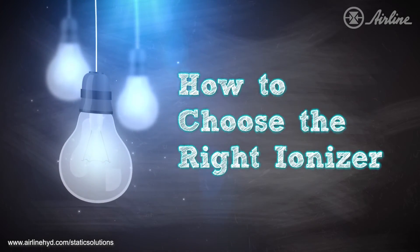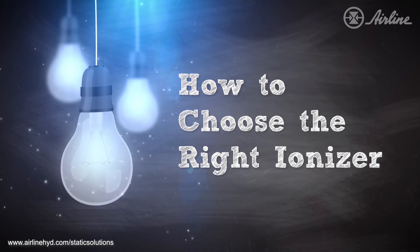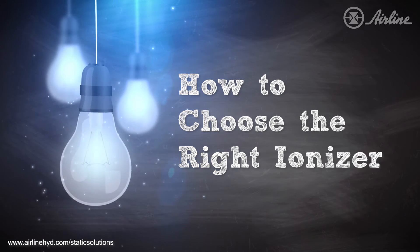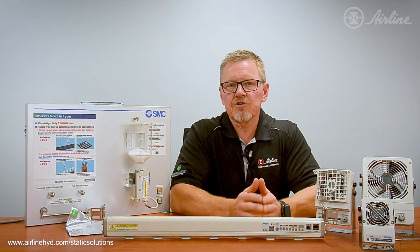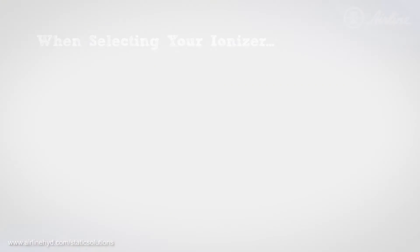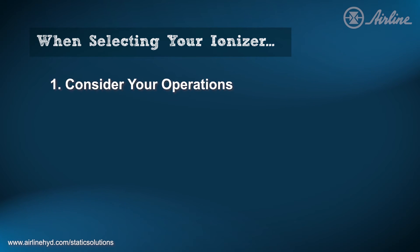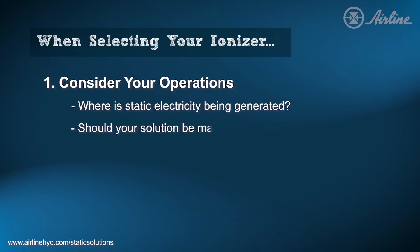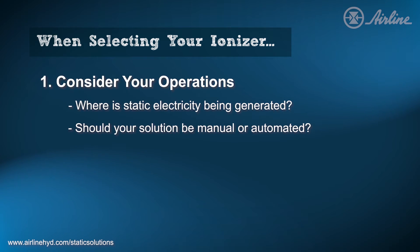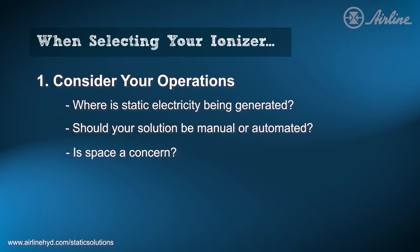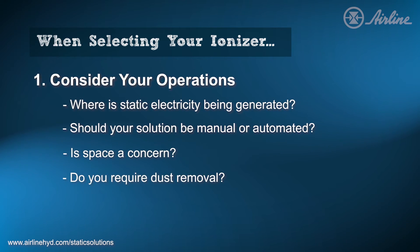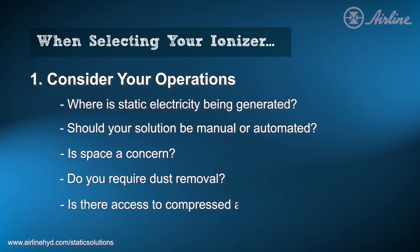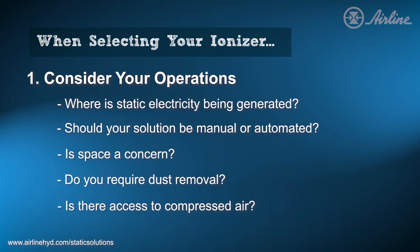As you can see, there are a lot of different options for static removal. So how do you go about choosing one? Well, there isn't a right or wrong answer for everyone. But by asking yourself a few questions, you can quickly narrow your options. The first thing is to consider your operation. Where in your process will the ionizer be used? Do you need a manual operation solution or an automated one? Is space a concern? Do you have a problem with dust clinging to your product? All of these questions will help you find the right solution.